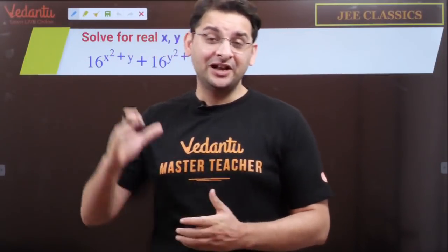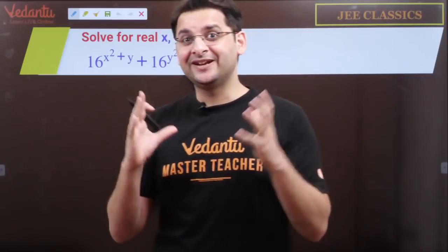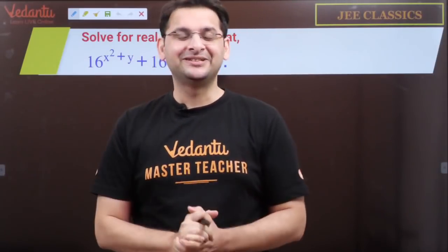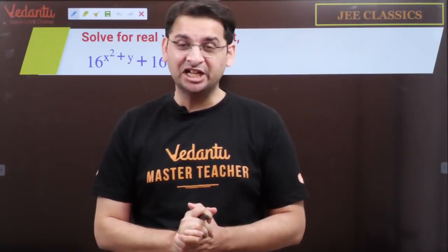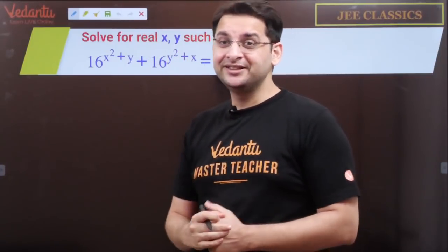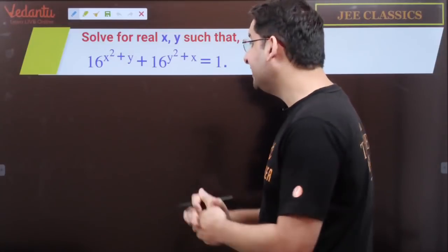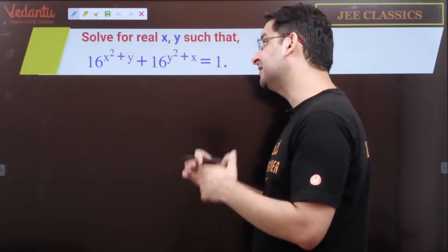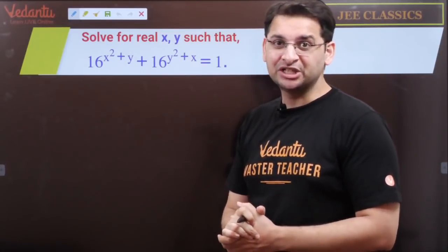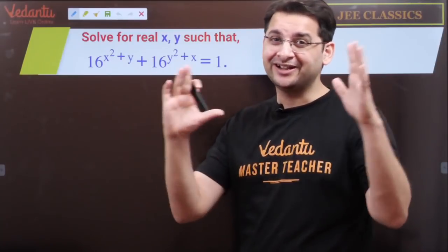Hi all, this is Abhay Mahajan and I welcome you to this series called JEE Classics, where some classic problems are discussed related to JEE Mains as well as Advanced. So let us look at this problem. The problem says solve for real x and y. It is given that 16^(x²+y) + 16^(y²+x) = 1.